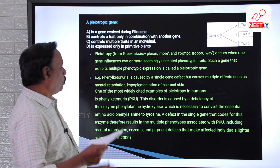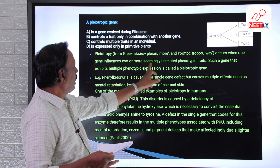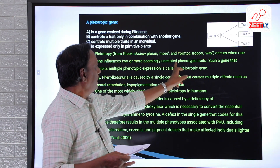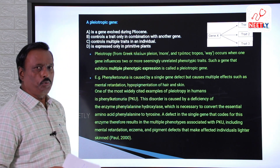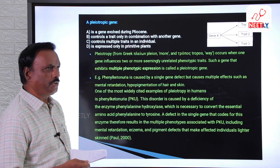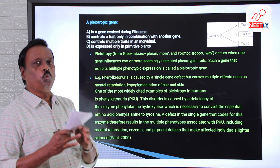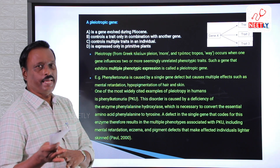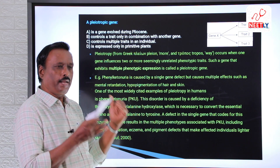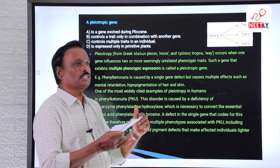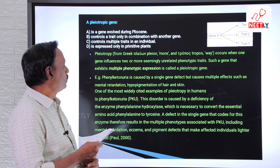It means one gene influences two or more seemingly unrelated phenotypic traits. Basically what we say in genetics is one gene, one enzyme, one trait — meaning one character. So for each and every character, one enzyme is responsible, controlled by one gene. That is what we used to say.